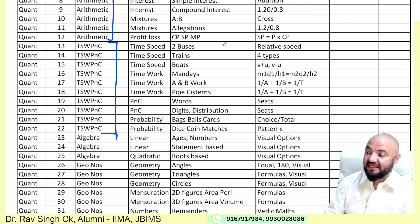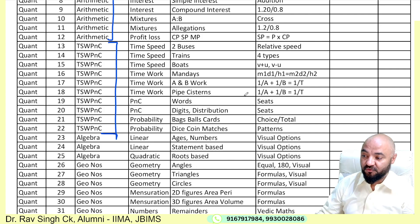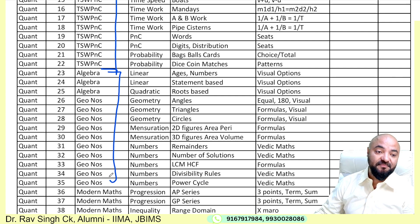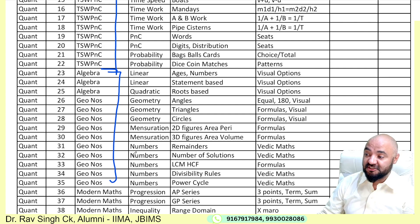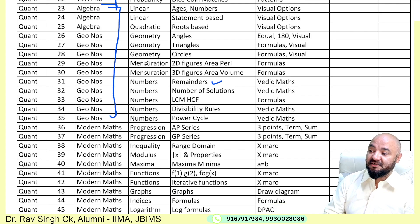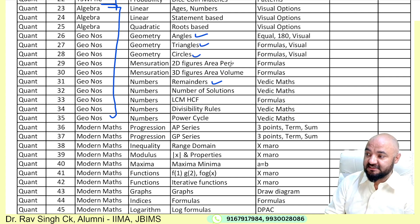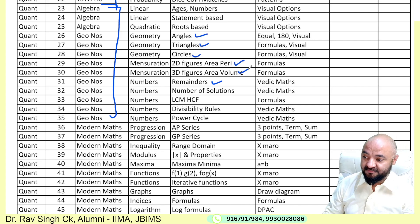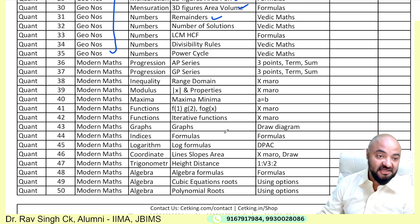Then we move to the second part which is Time, Speed and Distance, and Permutation & Combination — there are around 10 chapters within that to focus on. Third is Algebra, Geometry and Numbers, which includes all of Geometry, Algebra — linear equations, quadratic equations, algebraic expressions — and Numbers, including remainder theorems, geometric progressions, angles, triangles, and circles.